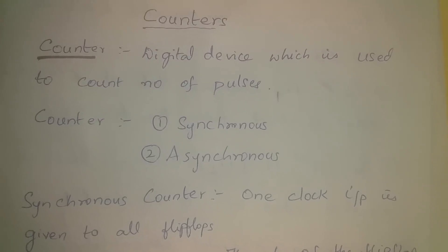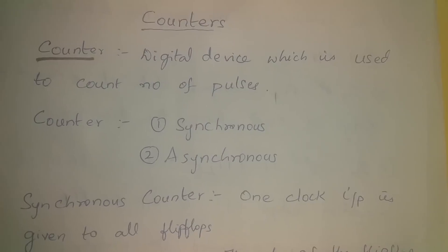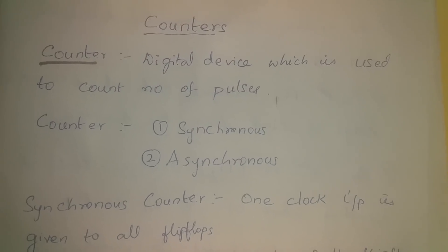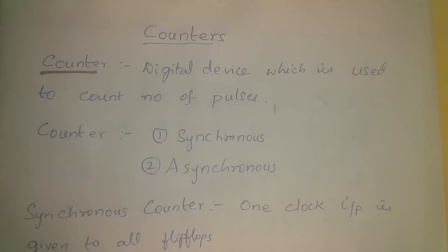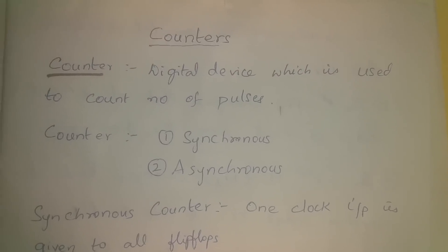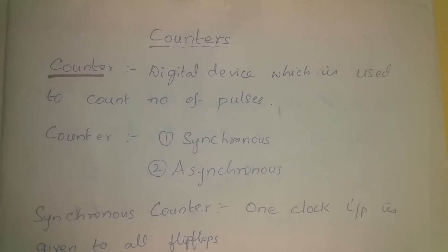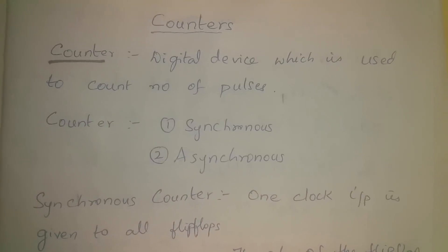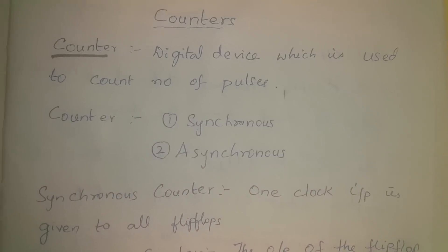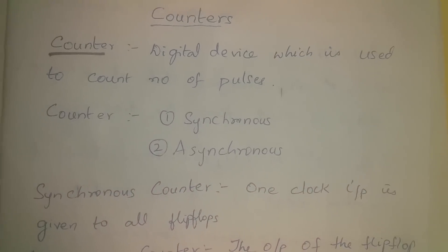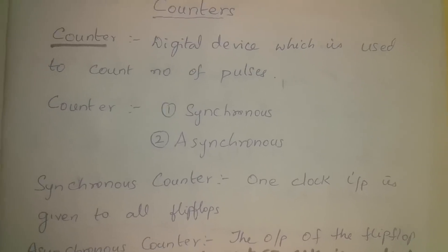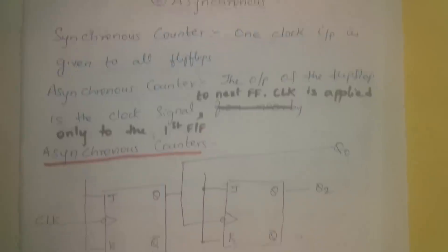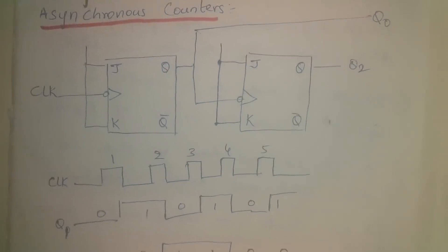In asynchronous counters, the clock is applied only to the first flip-flop, and the output of the first flip-flop is the clock to the next flip-flop. The output of one flip-flop is the clock to the subsequent flip-flop, so the outputs vary asynchronously with respect to the clock. Such counters are called asynchronous counters.